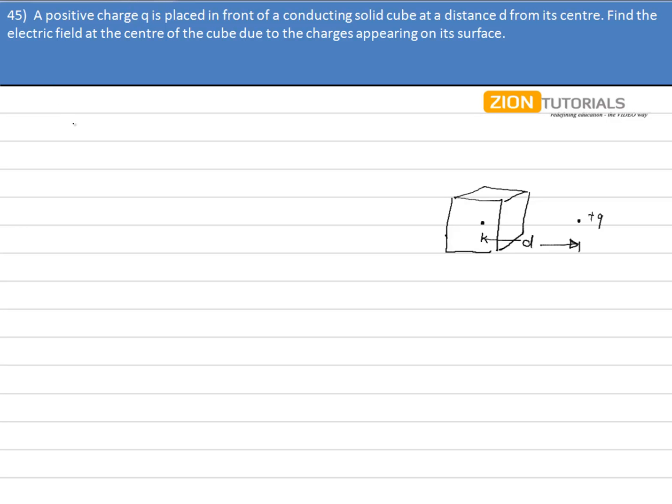So clearly the electric field at the point A, that is at the center of the cube, due to the charge Q is equal to KQ divided by D squared.